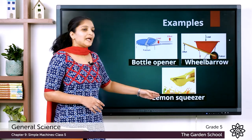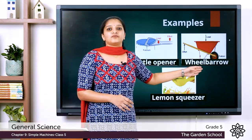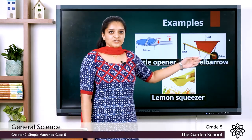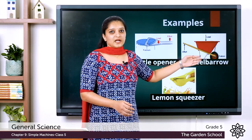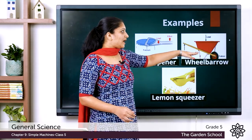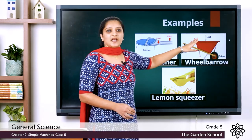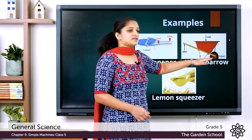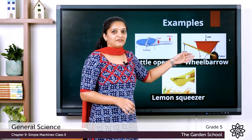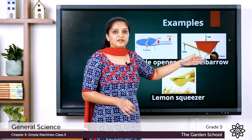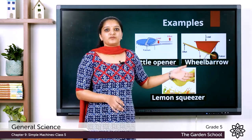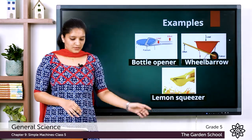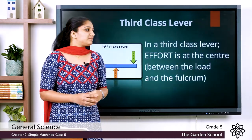The examples for second class lever include bottle opener, wheelbarrow, and lemon squeezer. Let's consider the wheelbarrow example. The wheelbarrow is used to carry sand, rock, etc. in construction sites. The area used to carry them is considered the area of load, the wheel part is considered the area of fulcrum, and the area where we apply force to push or pull this instrument is considered the area of effort.